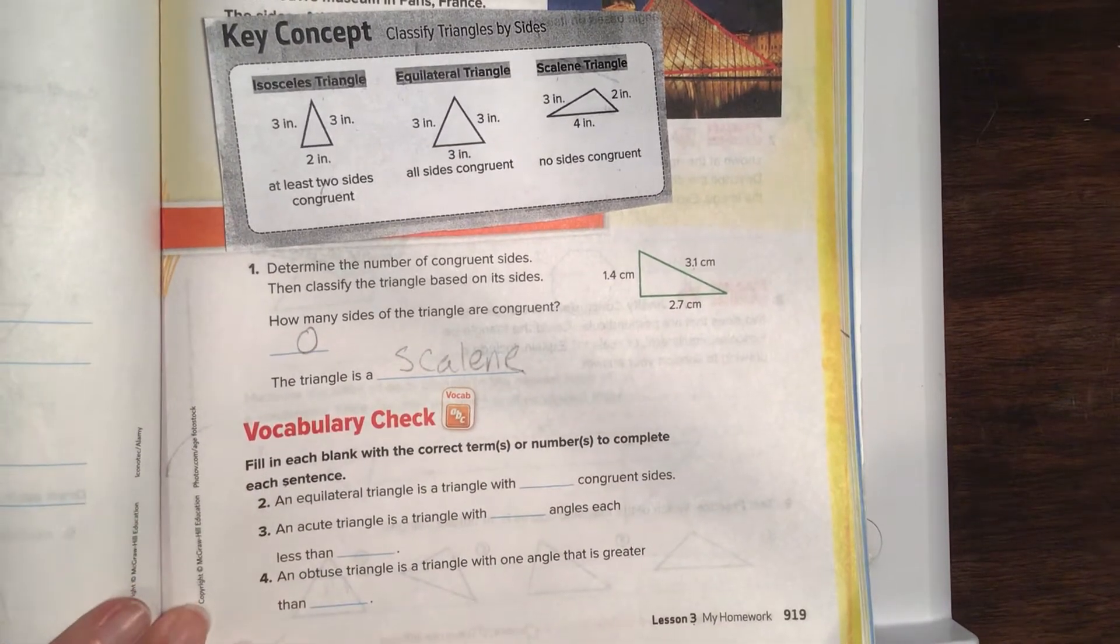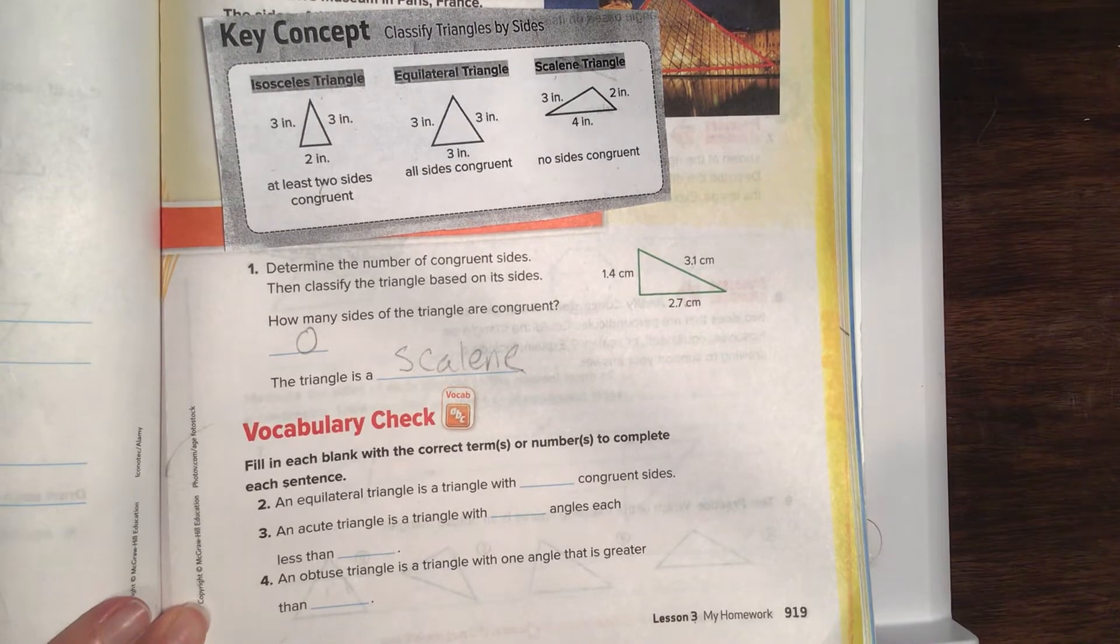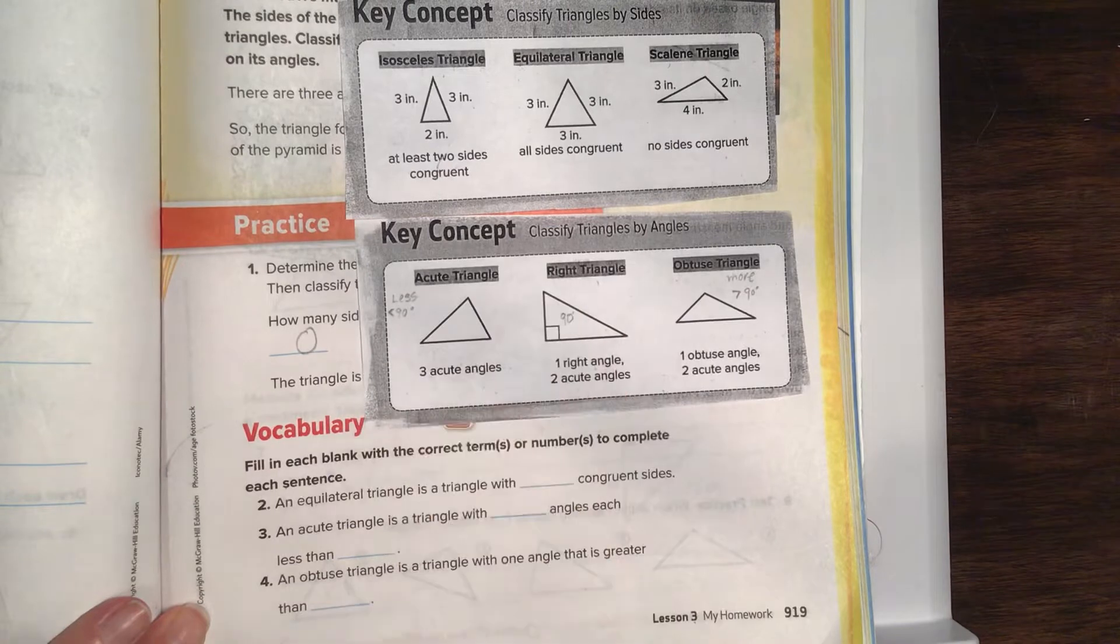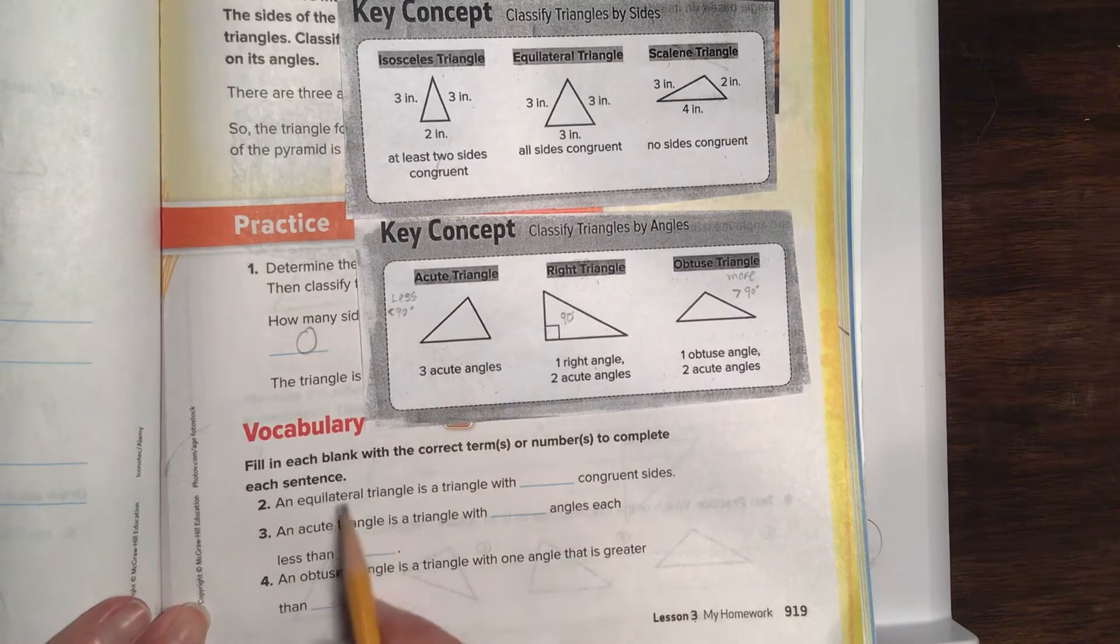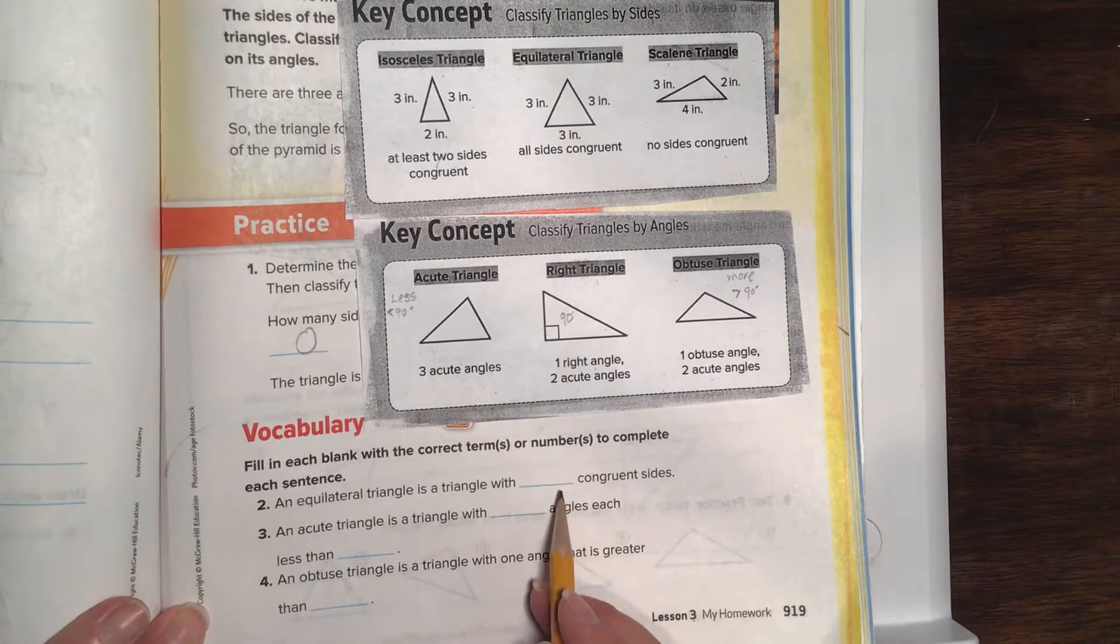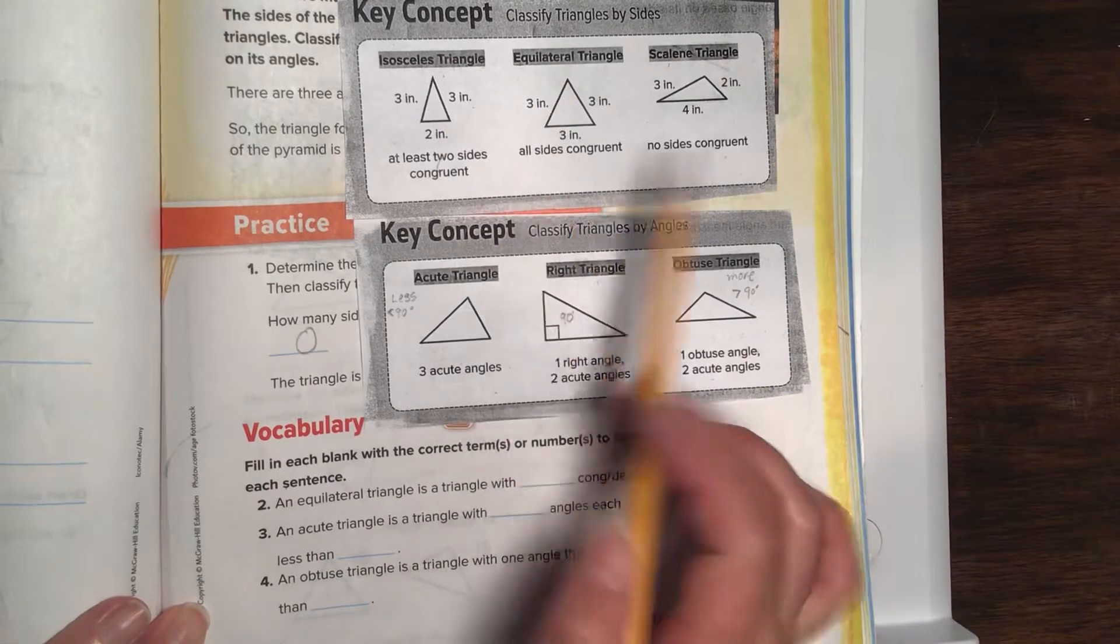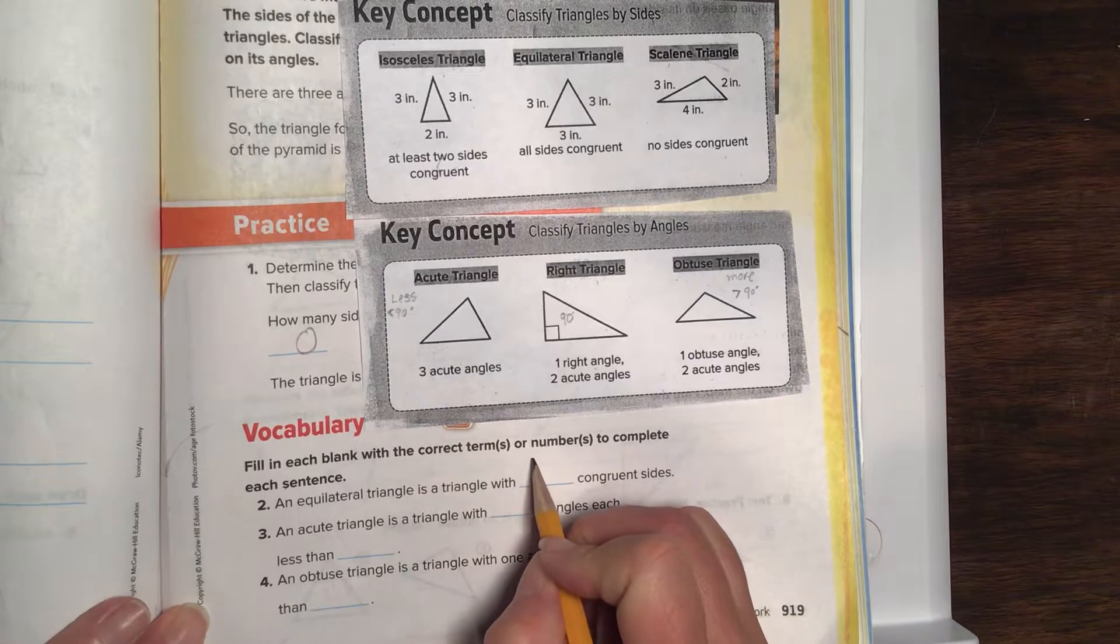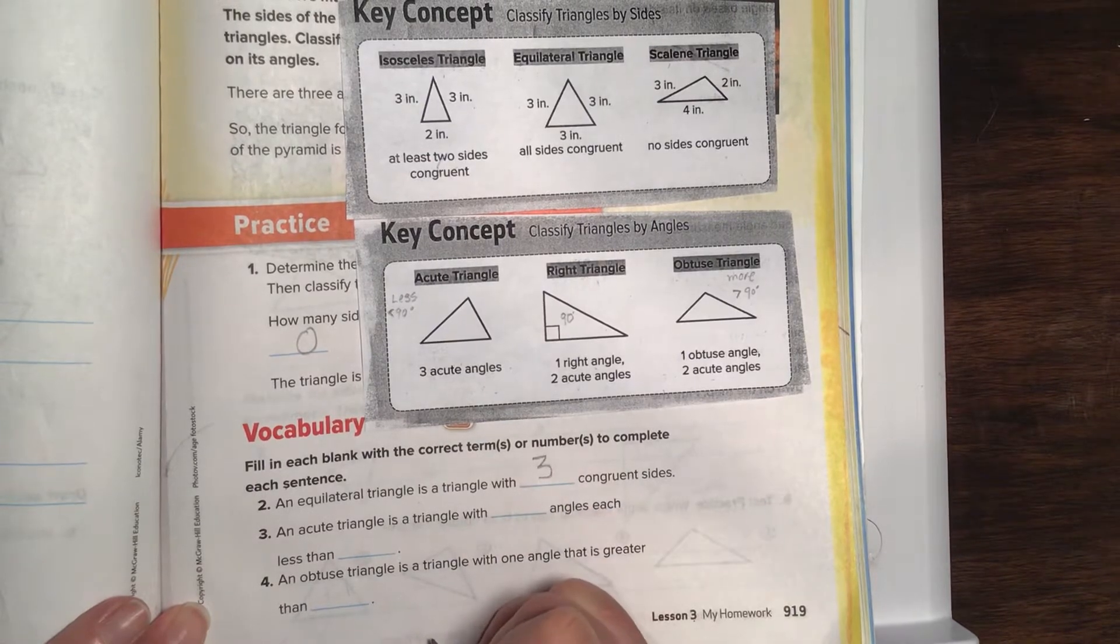Okay, vocabulary check. Fill in each blank with the correct term with the numbers to complete it. We're gonna just pull those right there to see if that helps us out. An equilateral triangle is a triangle with blank congruent sides. Well, equilateral has all congruent sides. So we're gonna say, since a triangle has this many sides, we're gonna say three congruent sides.